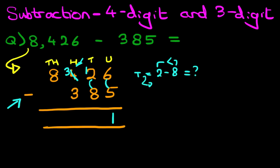The tens column has now become 12 minus 8. So, what is 12 minus 8? The answer is 4. So, let's write this down.